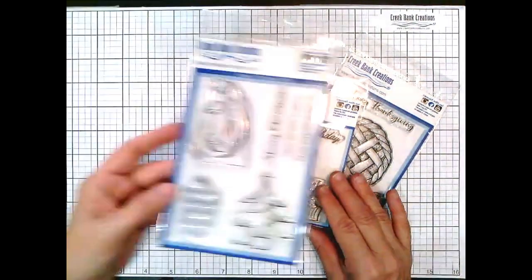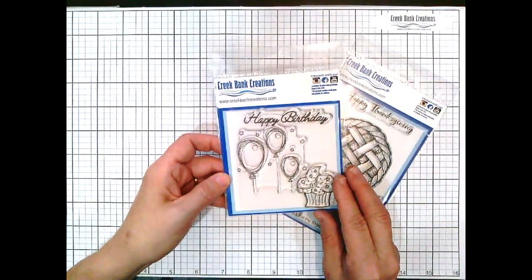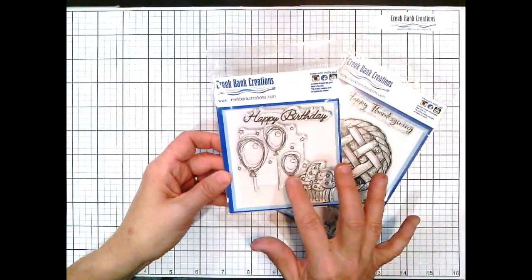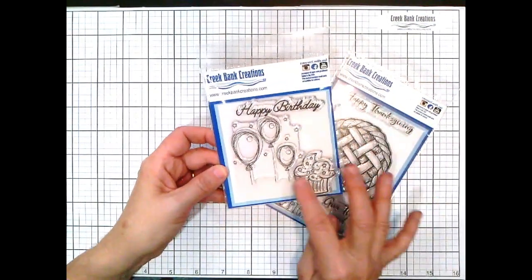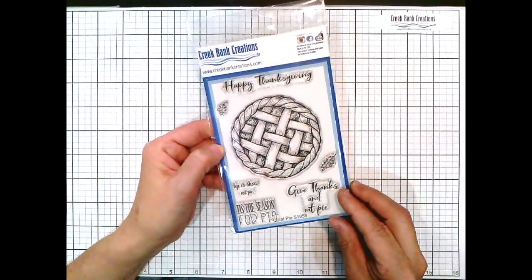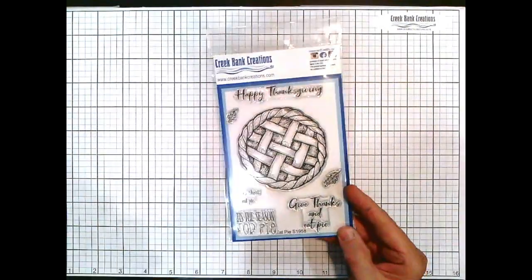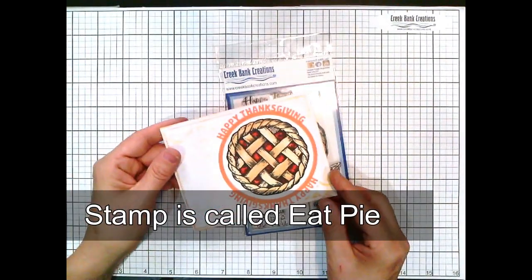It has a sentiment on it as well as the images. This is called Miracle of Christmas. This is Balloon Birthday with a large image to fit right in that circle panel, includes some text and a fun cupcake. And then Happy Thanksgiving is our pie stamp.